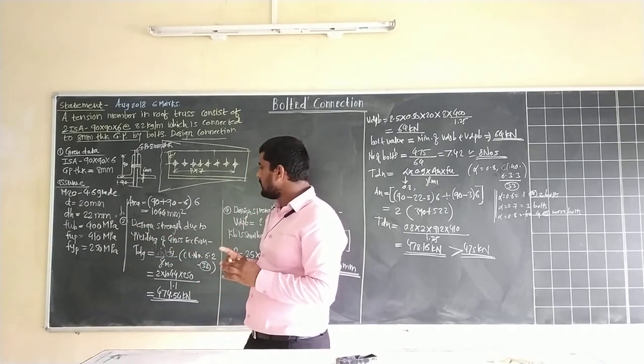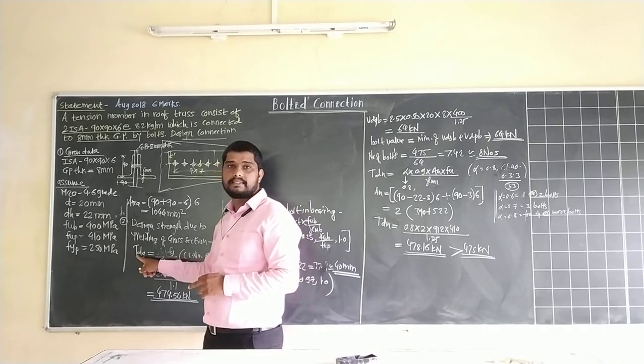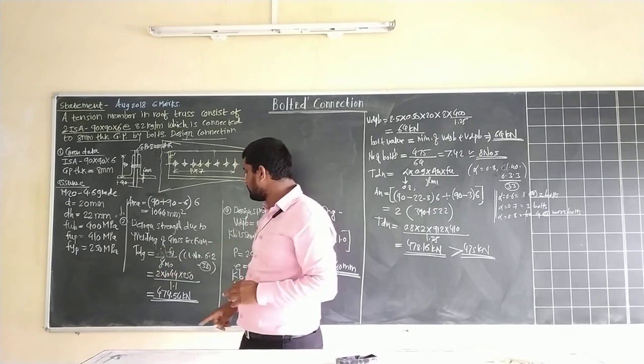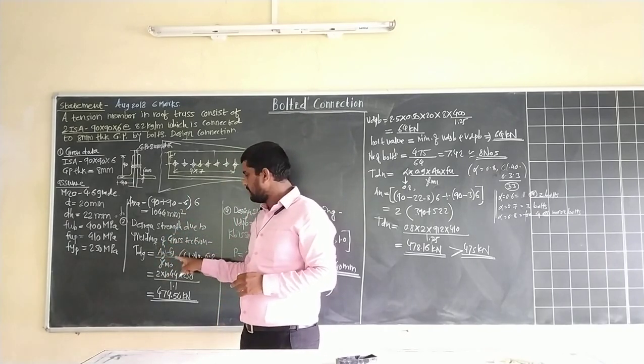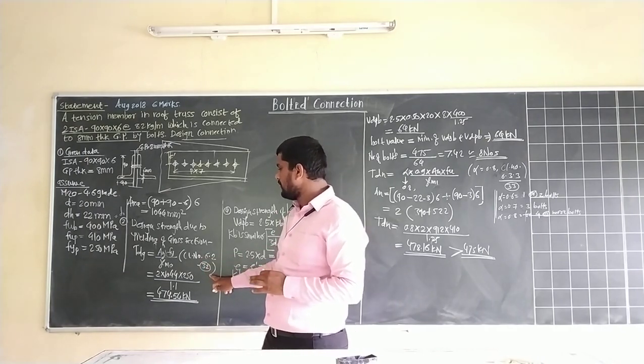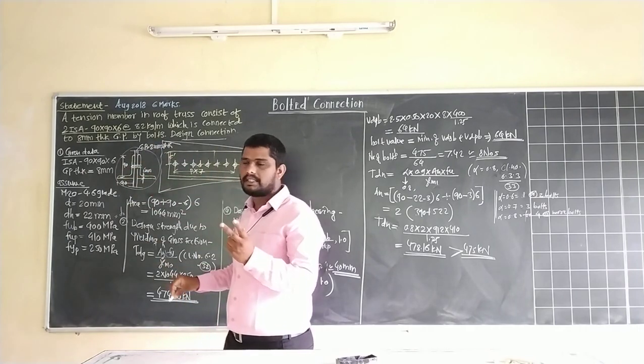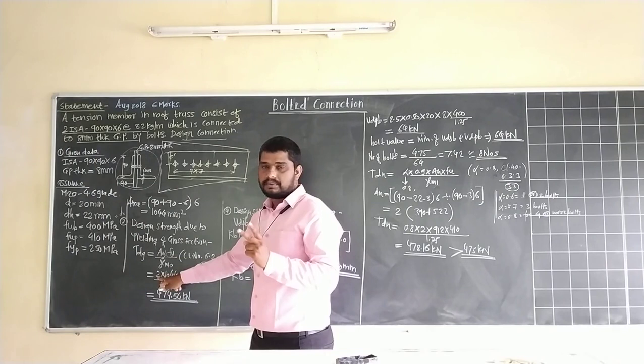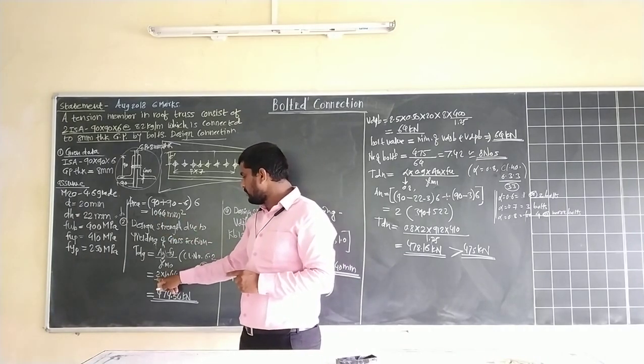Next step: determine design strength due to yielding of gross section, T_DG. T stands for design strength, D for design, G for gross section yielding. T_DG equals A_G into F_Y divided by gamma_M0. As per clause 6.2, IS 800-2007 page 32. Gross area for two angle sections, because we have two angle sections back to back, so 2 into 1044.